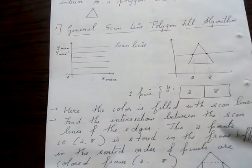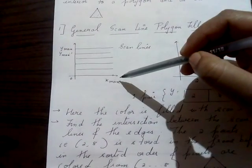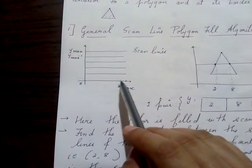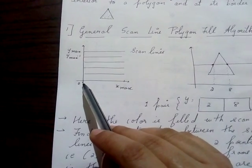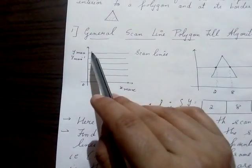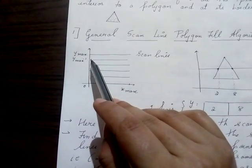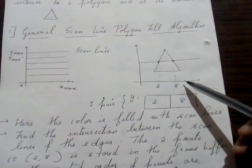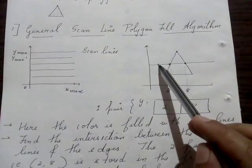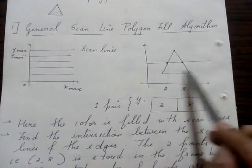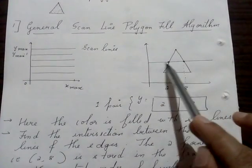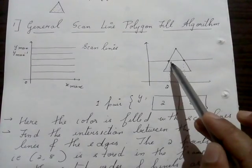We have a two-dimensional axis: the x-axis increases from left to right and the y-axis increases from bottom to top. The end of x is x-max and the end of y is y-max. The horizontal lines drawn across the coordinate system are known as scan lines. Given a polygon — for example, a triangle — we make use of these scan lines to fill it with color.